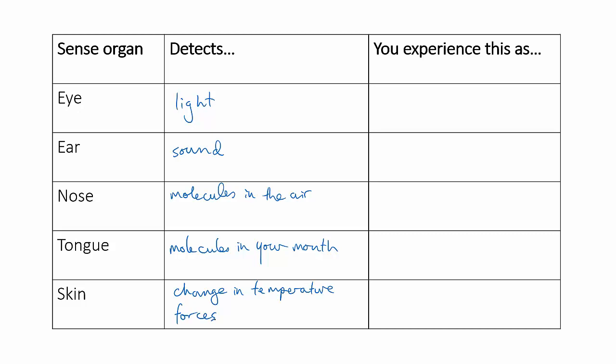Each of these organs collects its specialized type of information and turns it into a nerve signal, which is then passed to the PNS. Sensory neurons transmit that signal to the brain, which processes the information, and you then become aware of it.